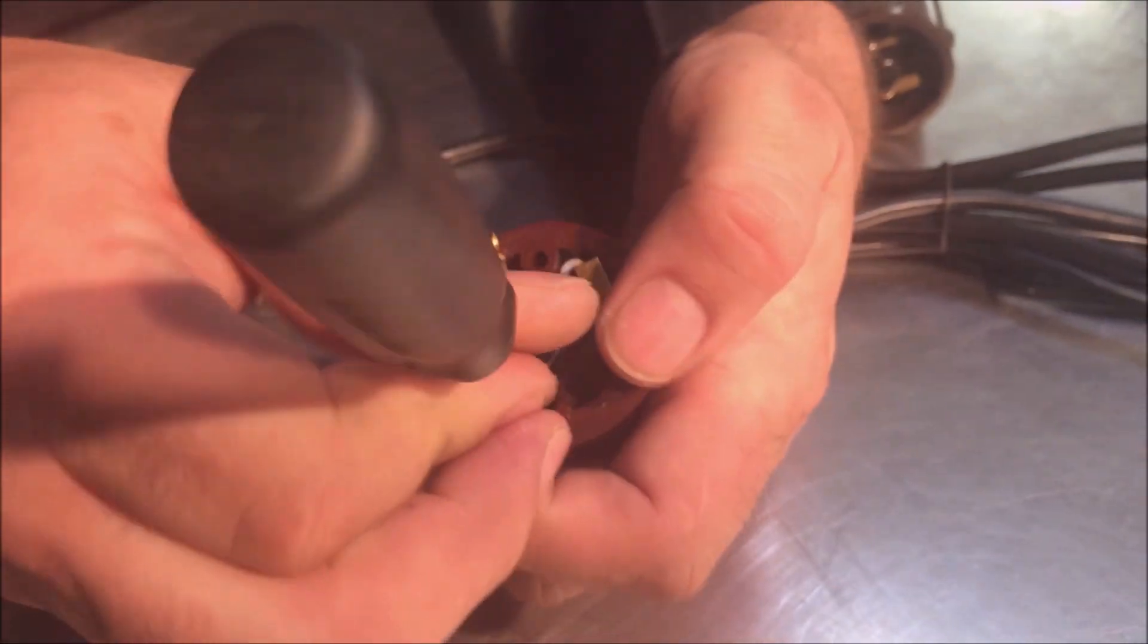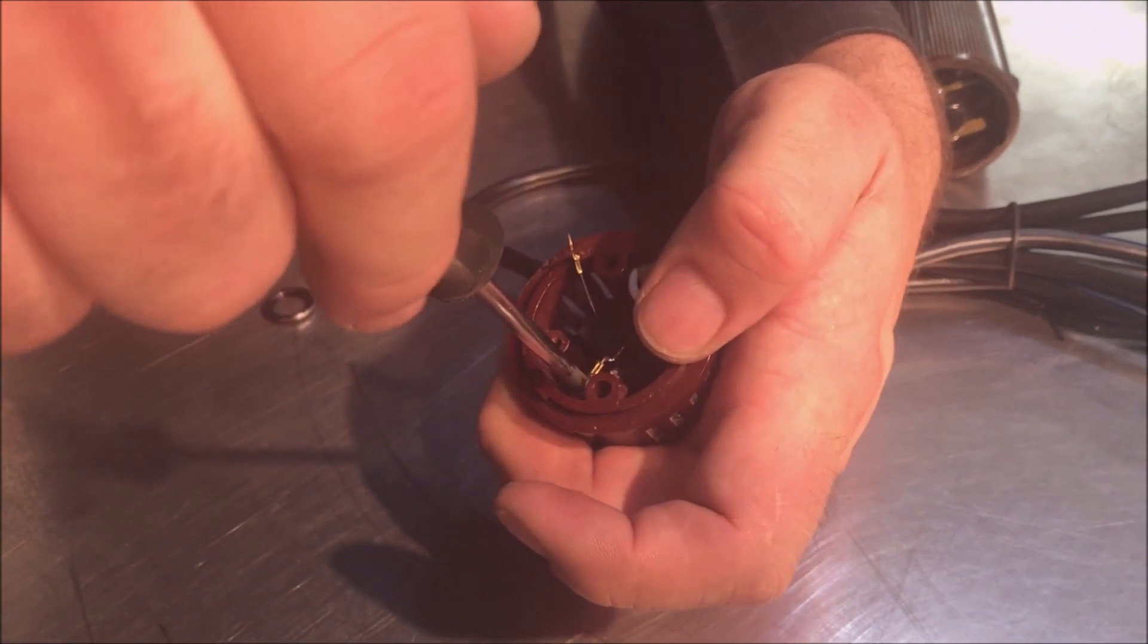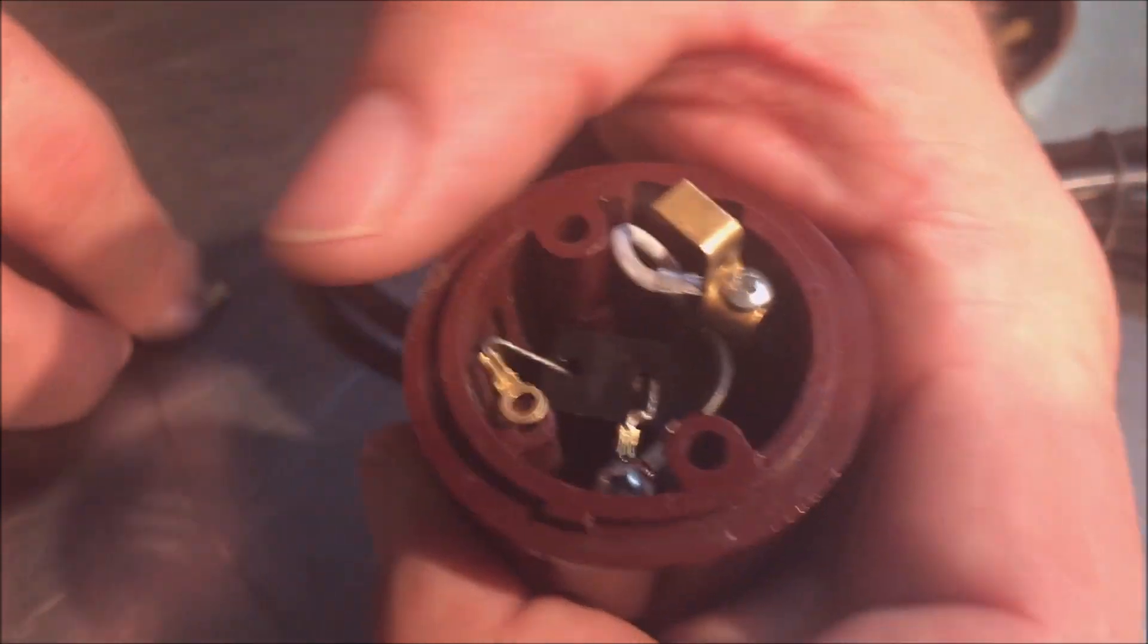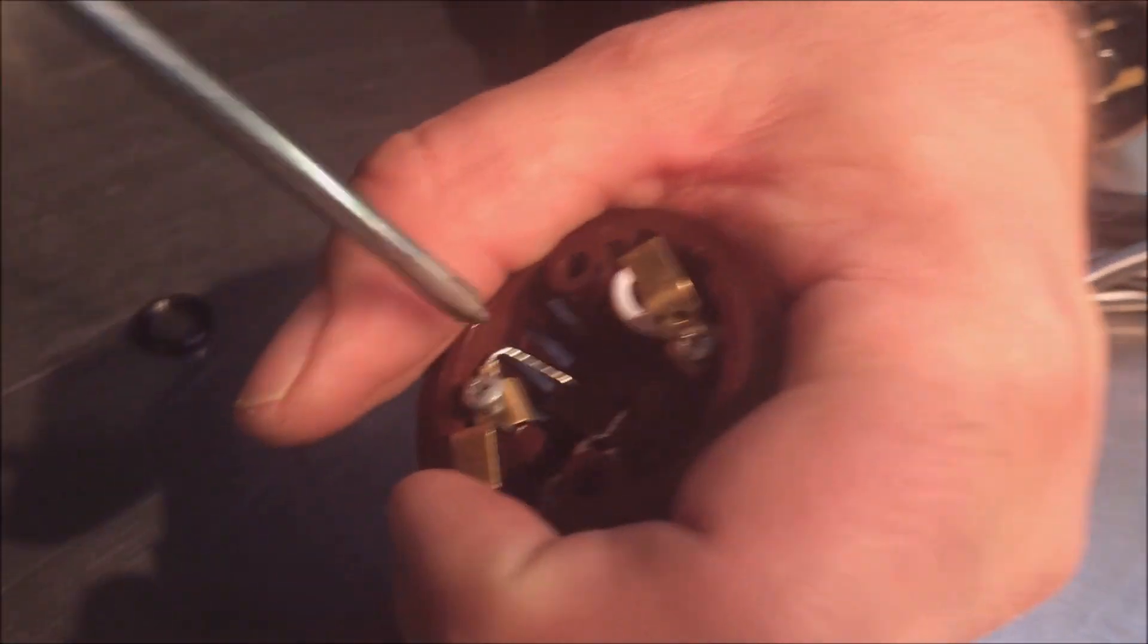I'm going to tighten it. Now your other wire from your switch goes over here to the post. Your other terminal goes on top. You want to tighten it down.